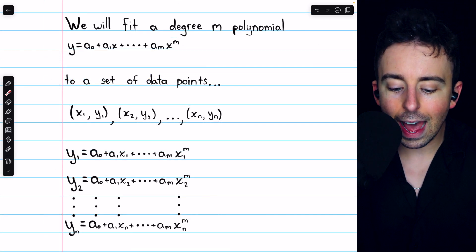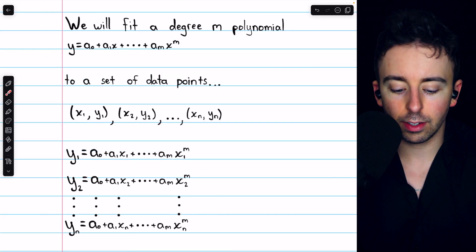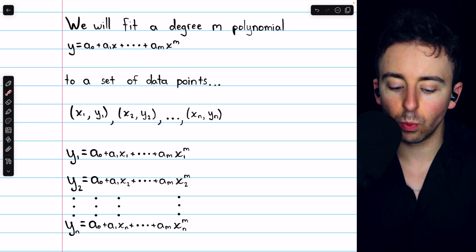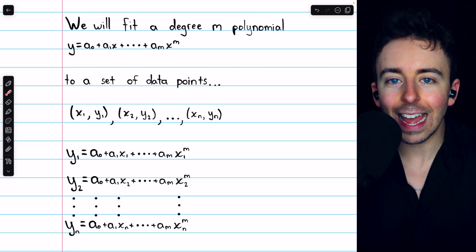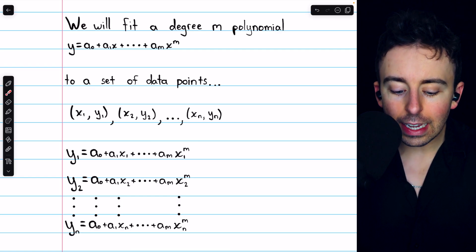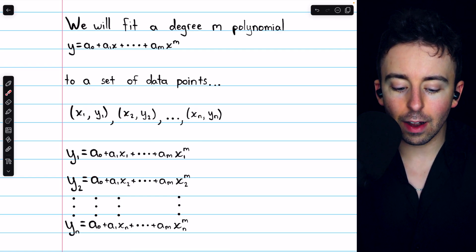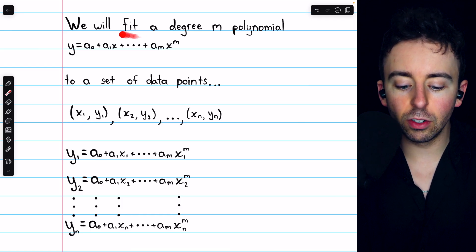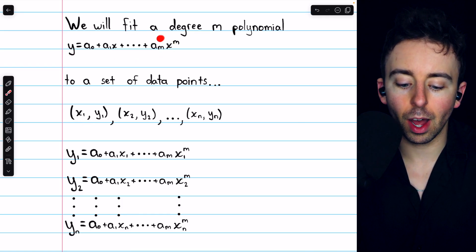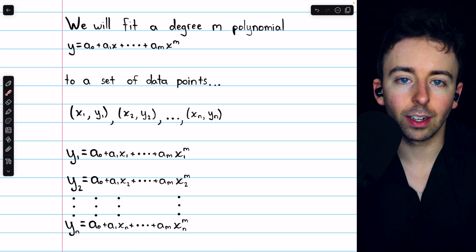You can see if we have N data points, (x1, y1), (x2, y2) through (xn, yn), we can create N equations. Each equation comes from taking one of these data points and plugging that point into the degree M polynomial with unspecified coefficients.